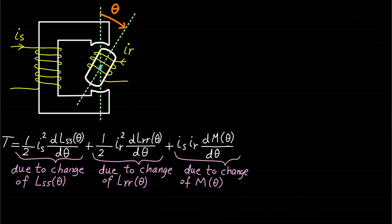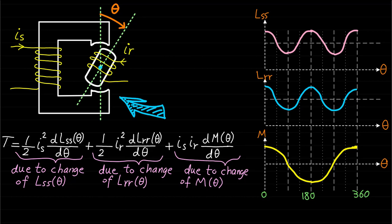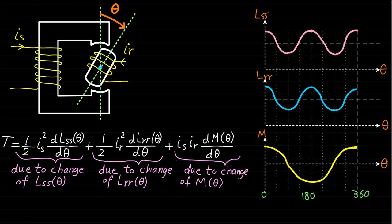We would like to emphasize again that this system has three torque components because all the inductances are changing with respect to rotor position. Note that this is not a general rule for all double or multiple excited machines. Most important machines in practice have only one or two of these inductances changing with respect to rotor position. Note that the mutual interaction torque component is available in almost all machines.